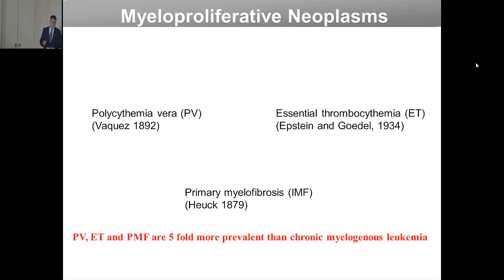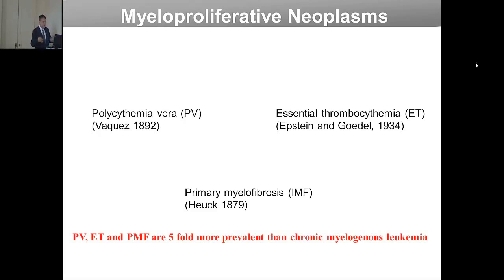There is a group of diseases we focus on called myeloproliferative neoplasms. They were grouped together by Professor William Dameshek in the 1950s, and they include polycythemia rubra vera — where there is a very high level of red blood cell production — essential thrombocythemia — where there is a high level of platelet production — and primary myelofibrosis, where malignant proliferation of myeloid progenitors leads to fibrosis of the marrow and extramedullary hematopoiesis.